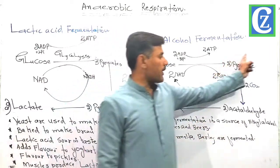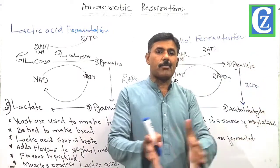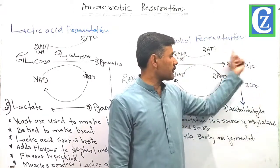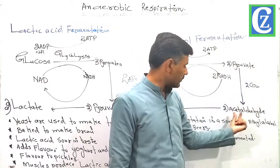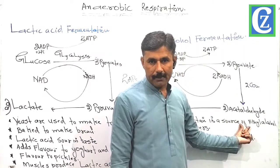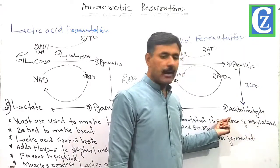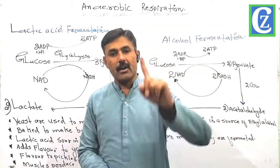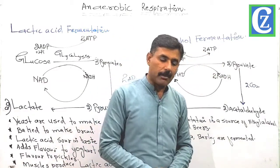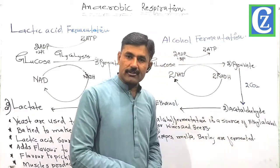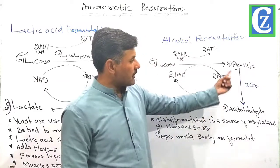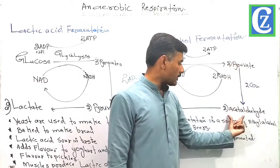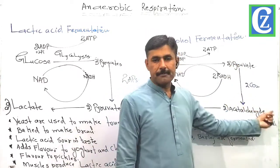What actually happens: from these two pyruvates, at the first stage, decarboxylation takes place and carbon dioxide is removed. Two molecules of carbon dioxide are removed from the two pyruvate molecules, and we synthesize two molecules of acetaldehyde. So alcohol fermentation is a two-step process. In the first step, decarboxylation takes place — pyruvate is decarboxylated, carbon dioxide is removed, and that produces the two-carbon fragment called acetaldehyde.